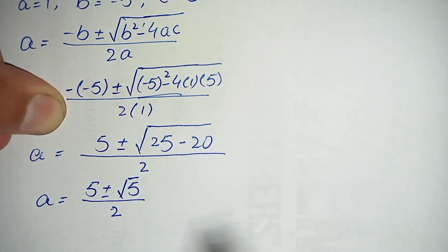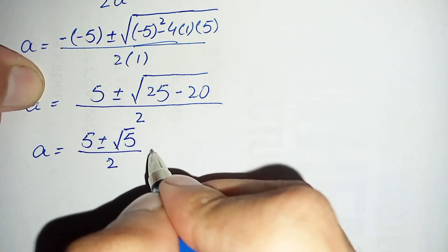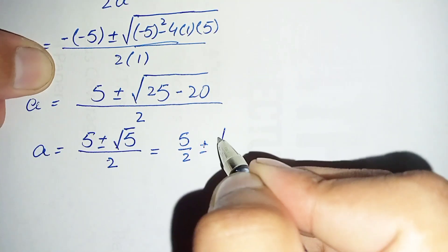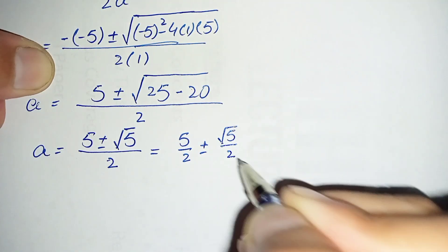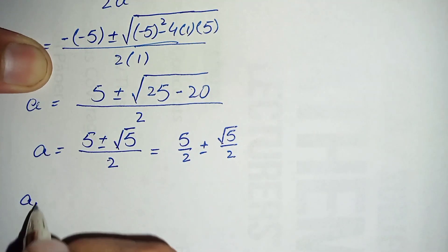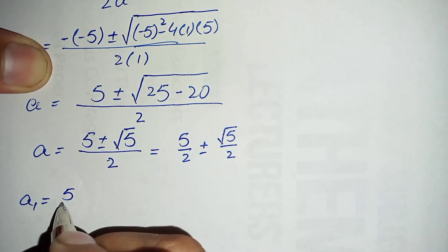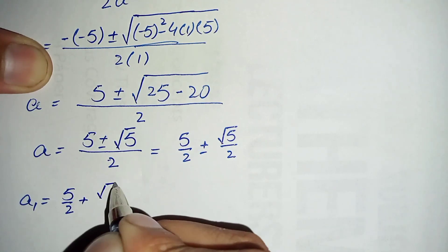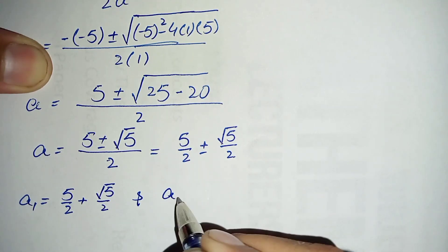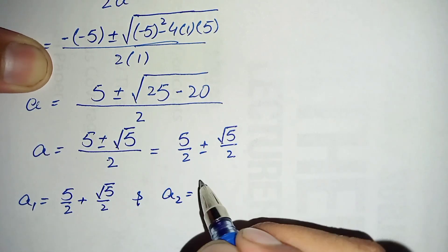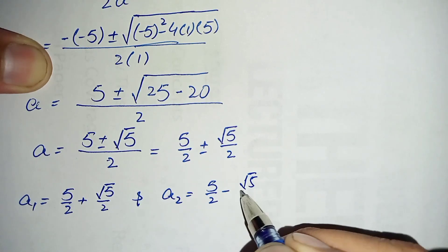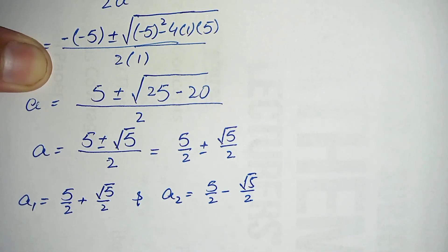Simplifying further: the square root of 25 minus 20 is square root of 5, so a equals 5 plus or minus square root of 5, all divided by 2. This gives two possible values: a₁ equals 5/2 plus square root of 5 divided by 2, and a₂ equals 5/2 minus square root of 5 divided by 2.